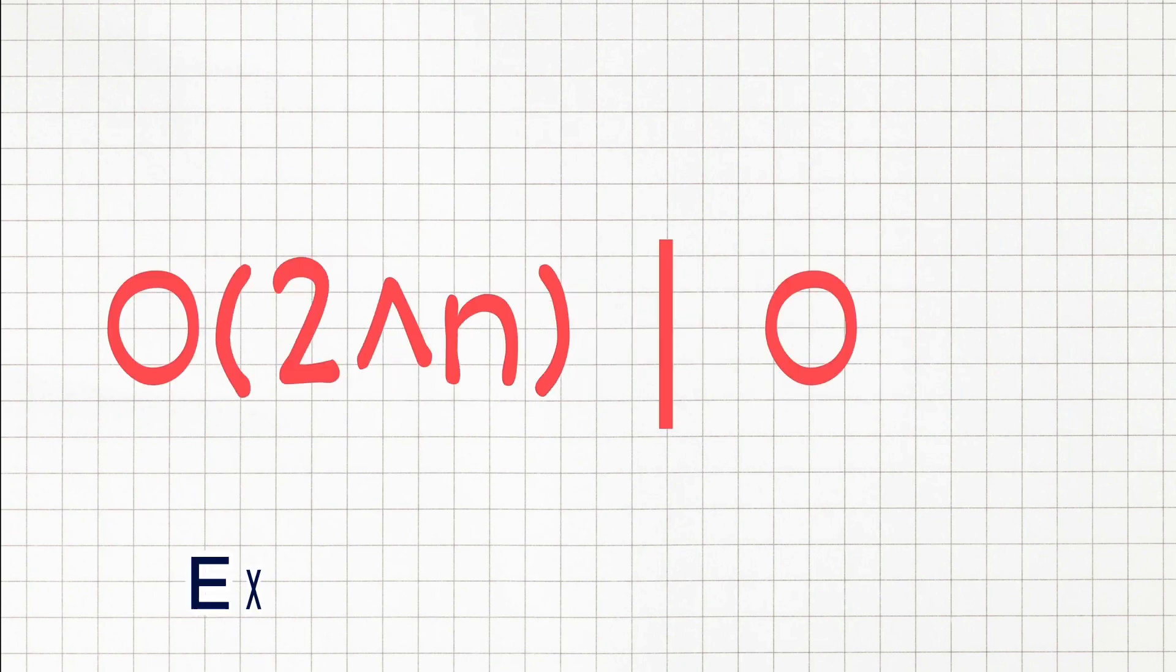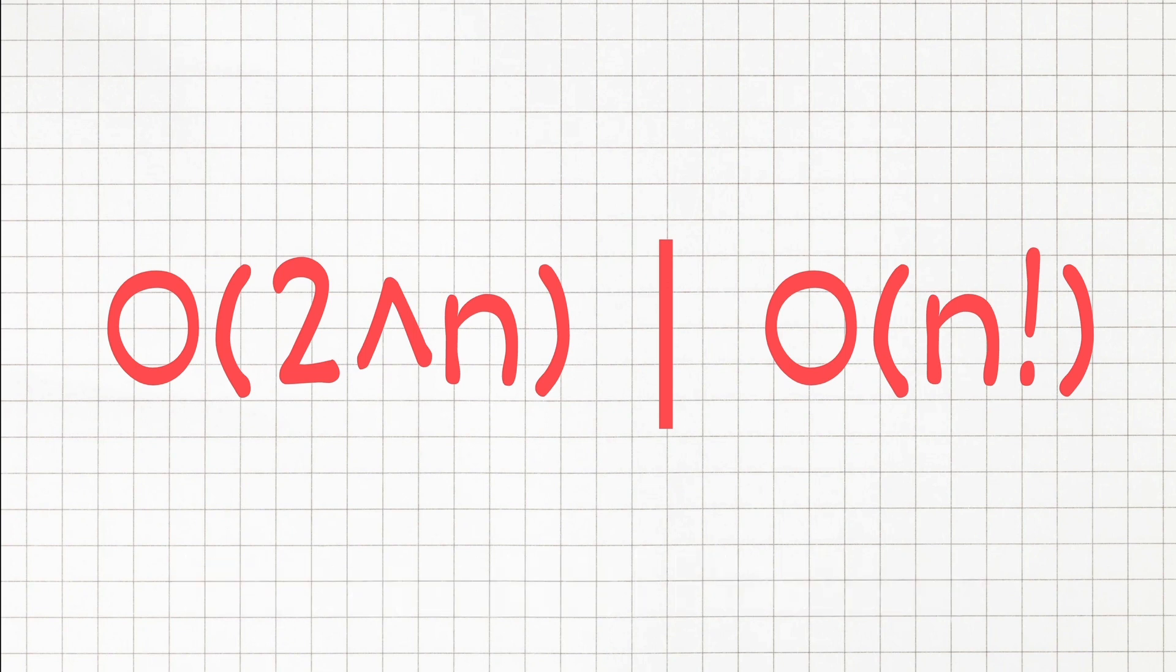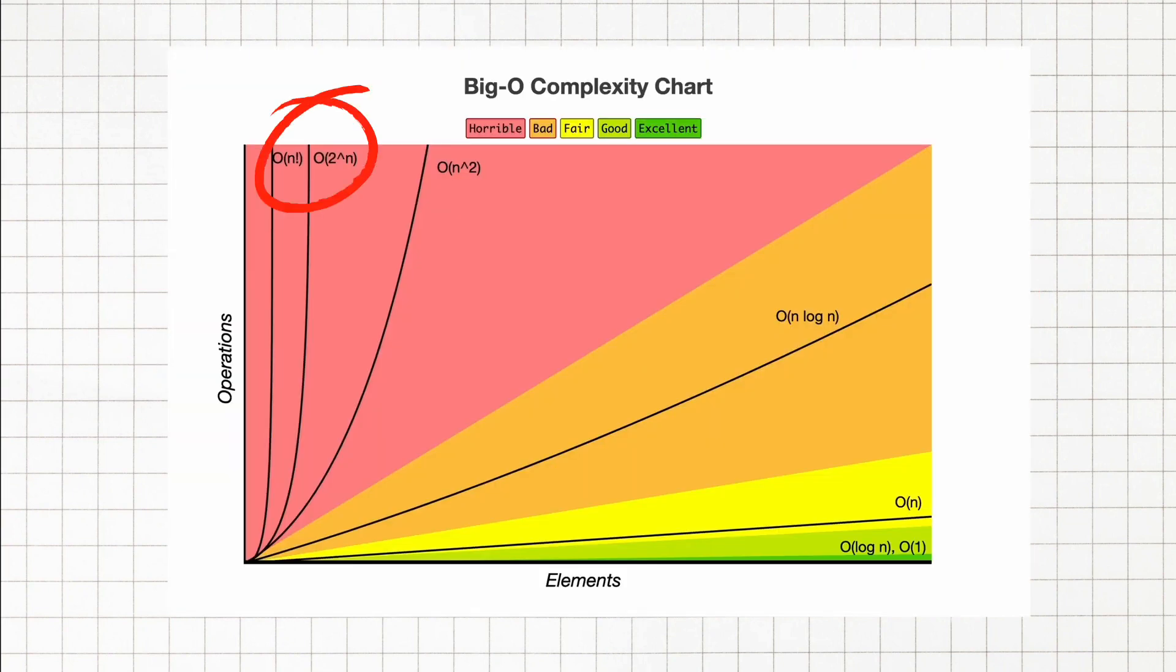And lastly we have exponential time complexity and factorial time complexity. These are at the higher end of our complexity spectrum, often seen with recursive algorithms or when adding loop for every element. For example,